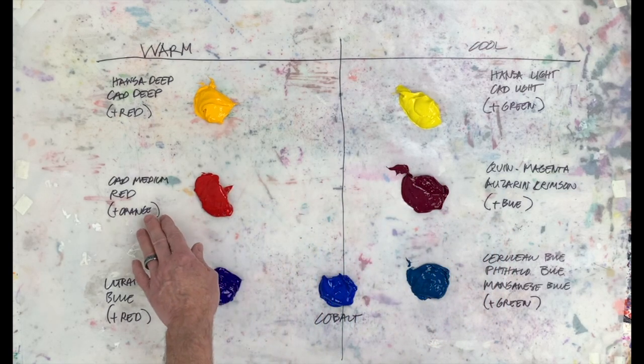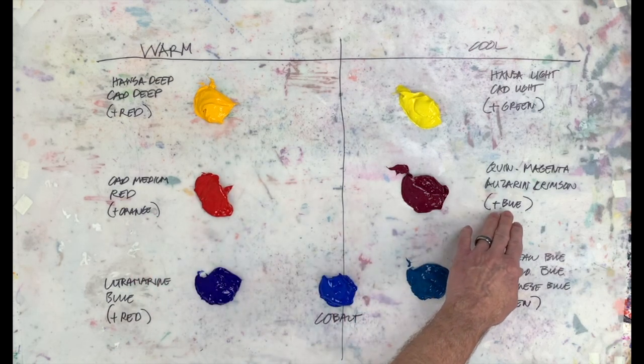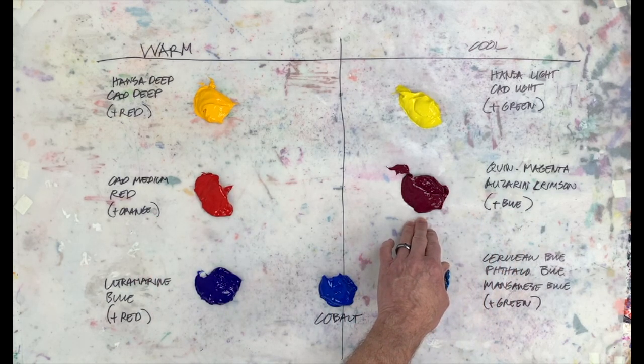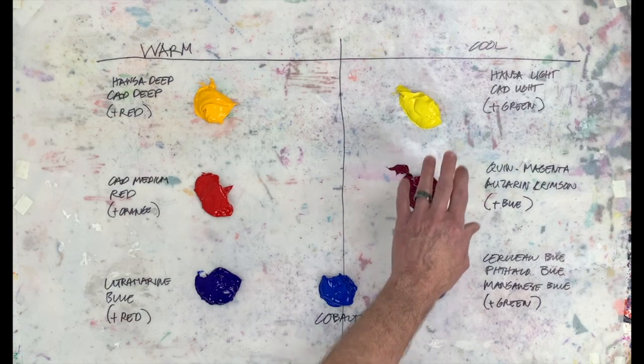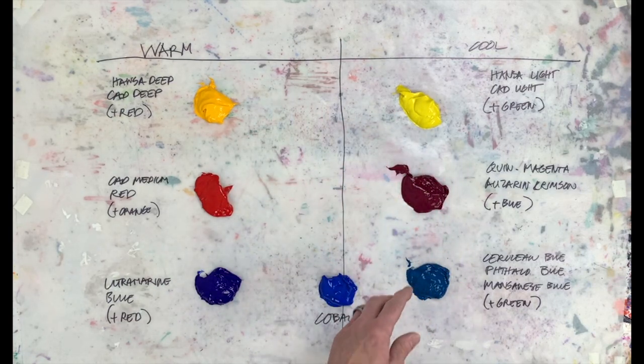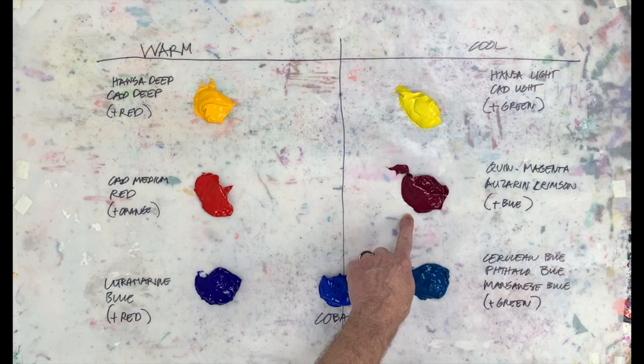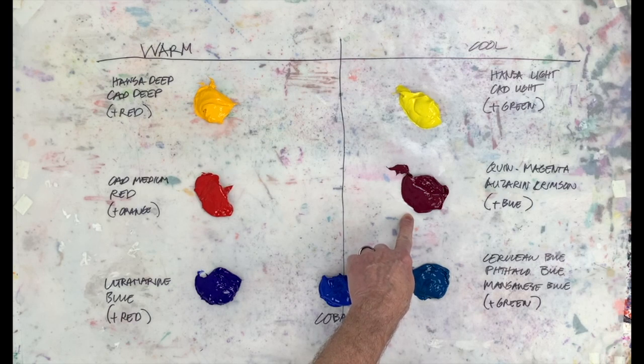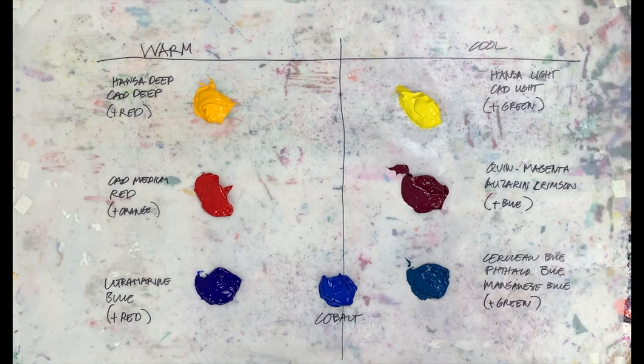This one has orange, makes it warmer. This one has blue, which makes it cooler. After a while, you should be able to recognize these and know just by looking, oh yeah, that's cooler because it's a darker value and it has blue in it, so it's cooler.